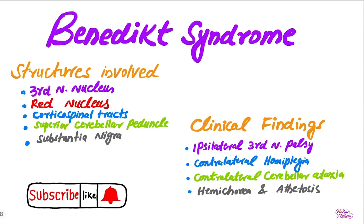In Benedict syndrome, the third nerve is involved, the red nucleus is involved, the corticospinal tract, superior cerebral peduncle, and substantia nigra are involved. These structures are involved in Benedict syndrome, and the clinical findings will be as follows.